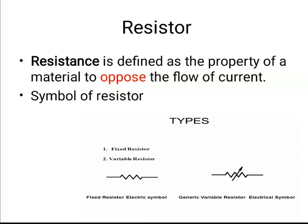The symbol of a resistor — a fixed resistor is drawn as a rectangle. When you draw an arrow through it, it becomes a variable resistor. In a variable resistor, we can change the value, for example from 10 ohms to 20 or 30 ohms. For that we have a potentiometer or a rheostat. Fixed resistors have a fixed value that cannot be changed.